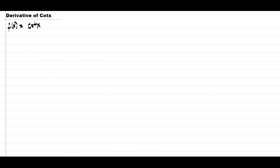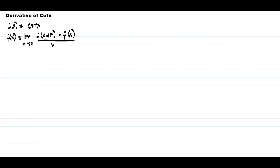For today's video, we are going to talk about how to find the derivative of cotangent x using the delta process, and we are going to explain everything in detail. We have f of x equals cotangent x, and the definition of the delta process: f prime of x equals the limit of f of x plus h minus f of x, all over h, as h approaches 0.